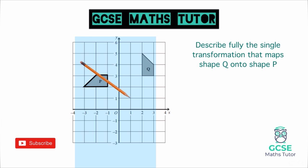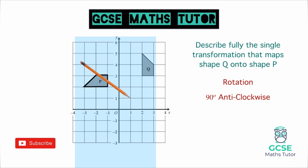To describe this rotation, we need three things. First, state that it is a rotation. Next, state the angle and direction: 90 degrees anticlockwise. Finally, give the coordinate: about the point 1, 1. So our full answer would be: a rotation, 90 degrees anticlockwise, about the point 1, 1. Those are the three things needed to fully describe a rotation.